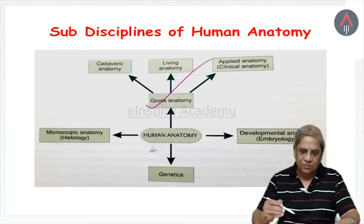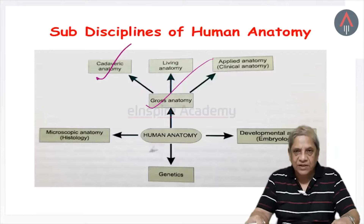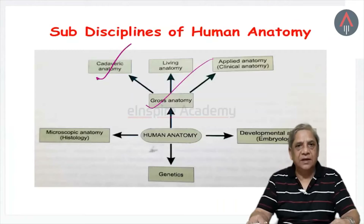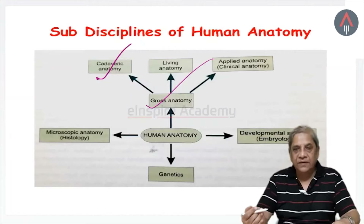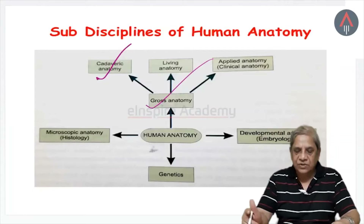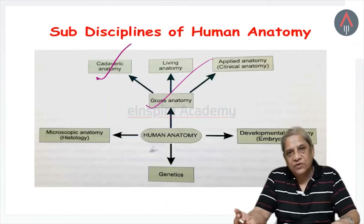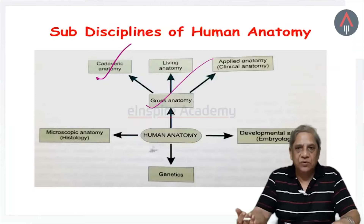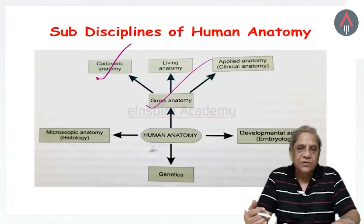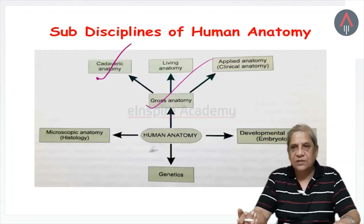Gross anatomy has three subdivisions. The most important is cadaveric anatomy — 'cadaver' means the dead body. You will dissect the dead body to learn structures and their relationships, which can be very well seen by the naked eye. At the same time, you will learn living anatomy — the anatomy learned from a living person. Because of techniques like X-ray, you can visualize bones and joints, and with special procedures such as barium enema you can visualize the lumen of organs like the GIT, or inject radio-opaque dye to visualize the ureter and bladder.